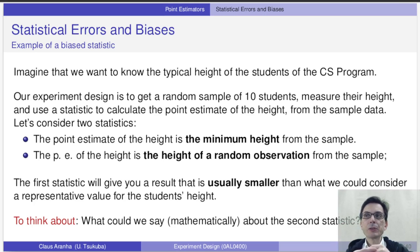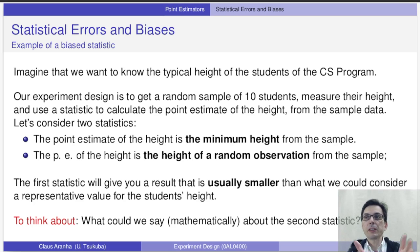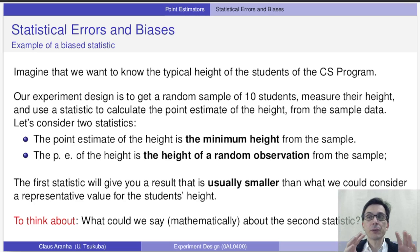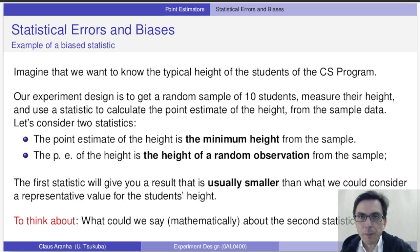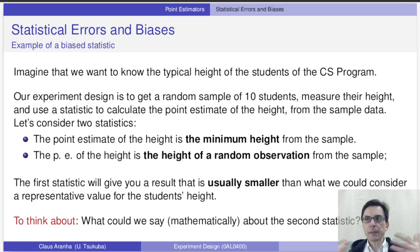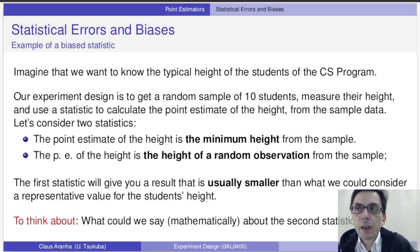Think about these two statistics for a little bit. The first one — take the smallest student — will give us a value that is usually smaller than the value of the true parameter of the model. Not always; for example, if we take all the students from the basketball team, the smallest of them will still be higher than the average. But in general, this minimum statistic will give us a value that is smaller than the true value. So this is why it's a biased estimator.